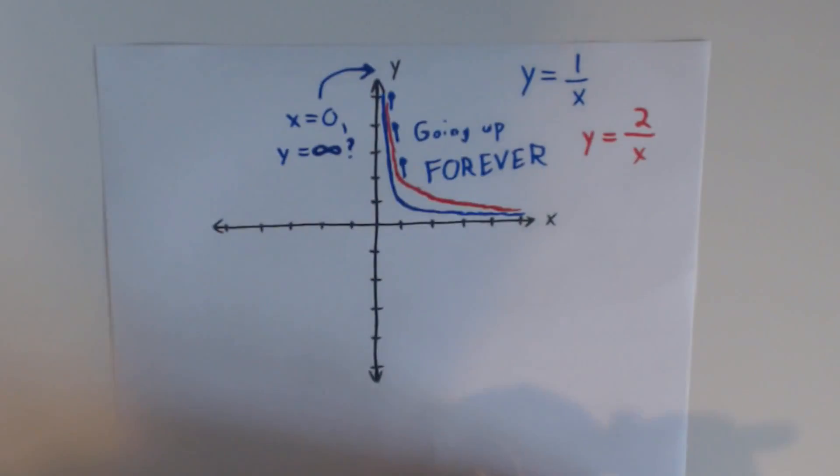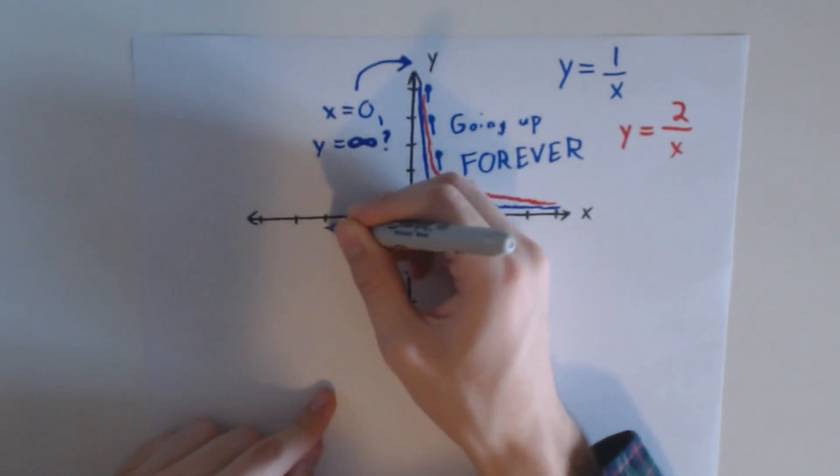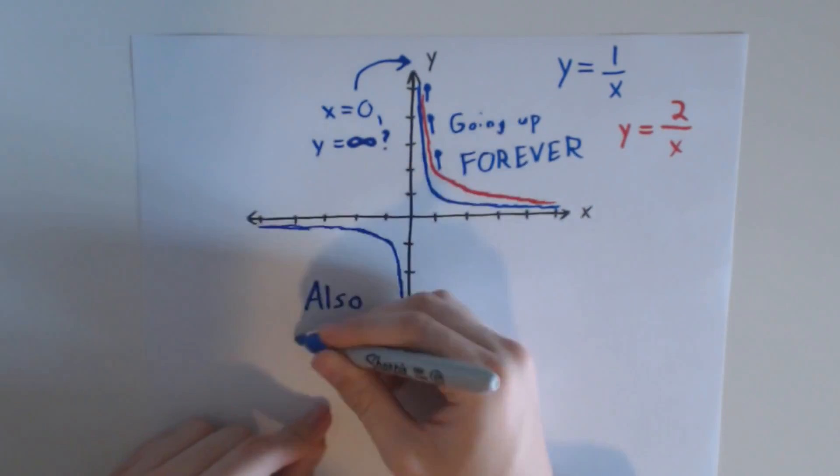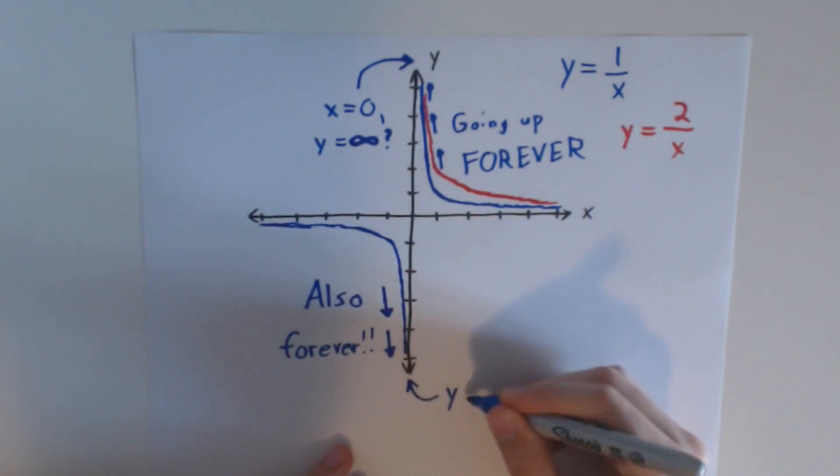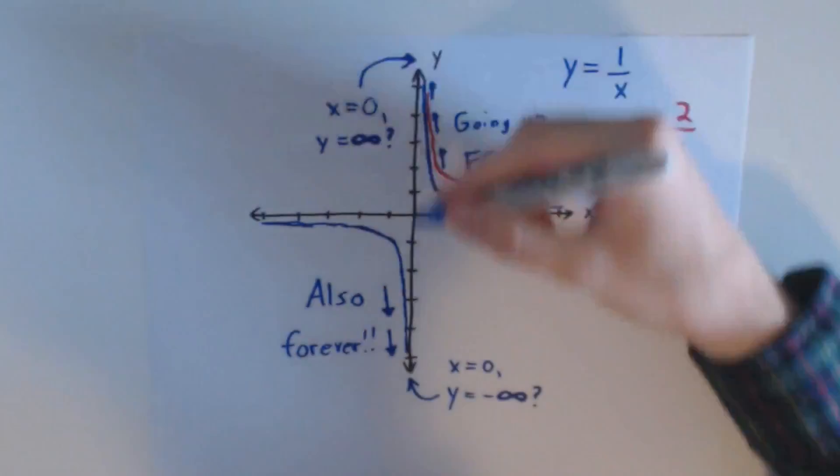It's tempting to say yes, but we've only looked at half of the problem. Try using negative values for x. You'll quickly see that when we approach zero from this direction, we actually approach negative infinity.